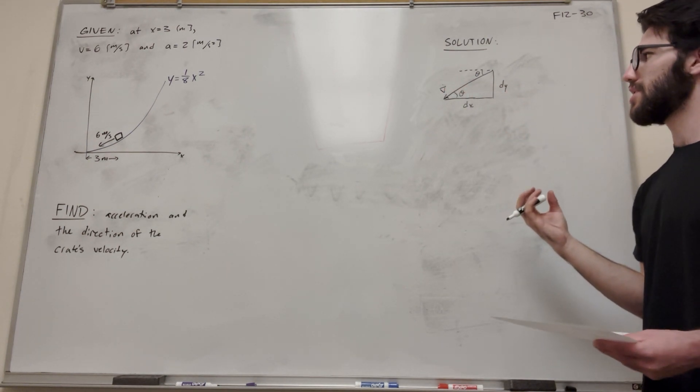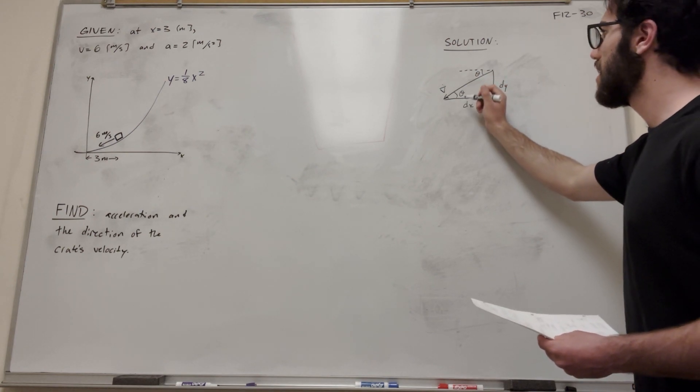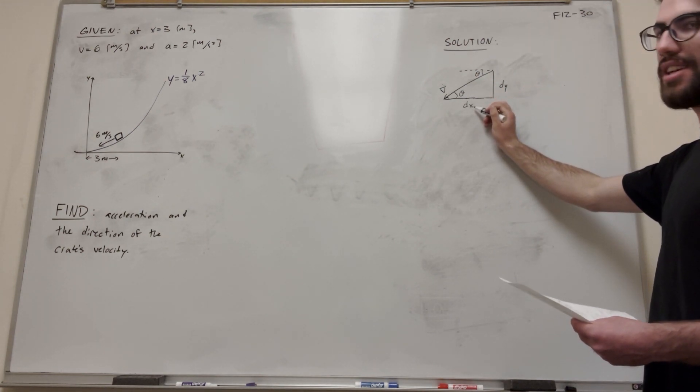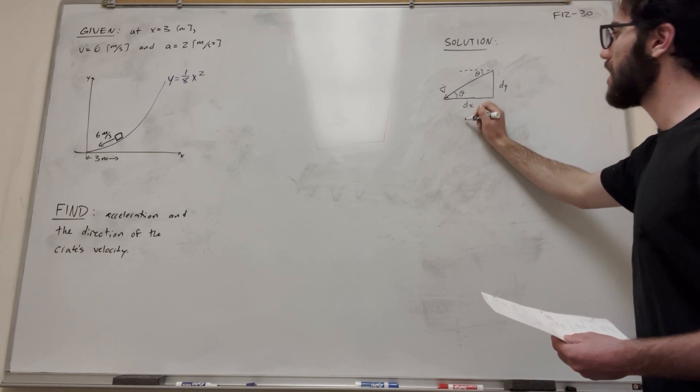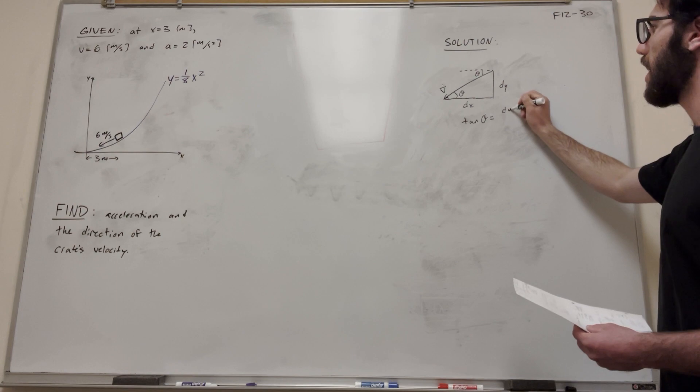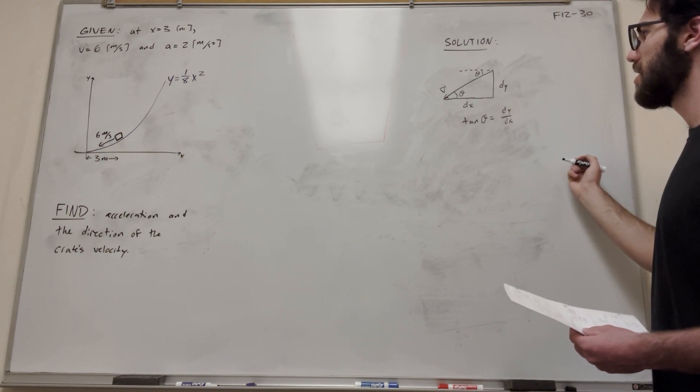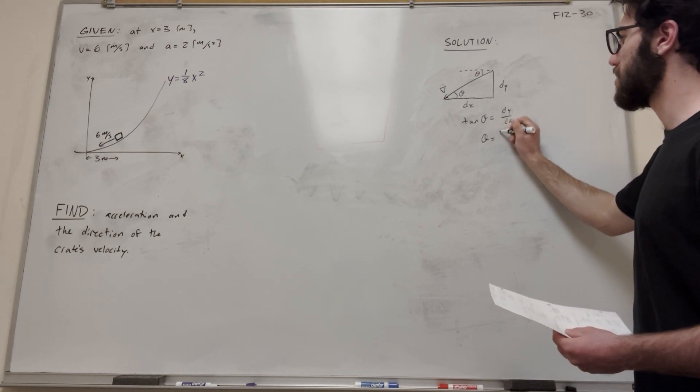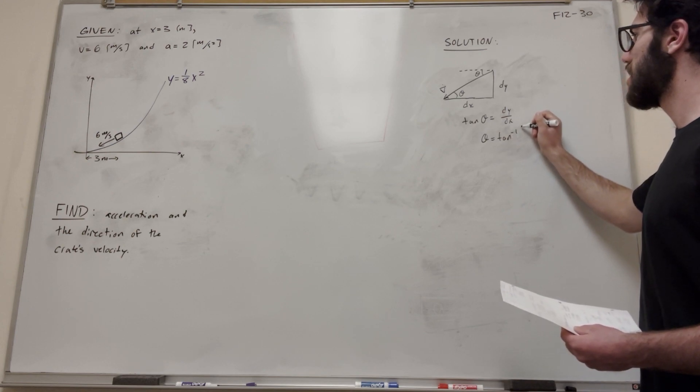So let's solve this. If we're solving for theta, we have opposite and adjacent. So we want to do tangent. So tangent of theta equals opposite over adjacent, so dy over dx. Okay, so then we do theta equals inverse tangent of dy dx. And dy dx is just the derivative of y here.